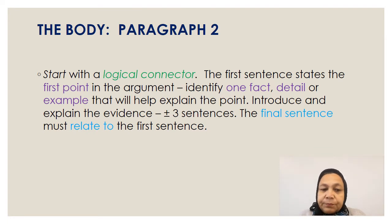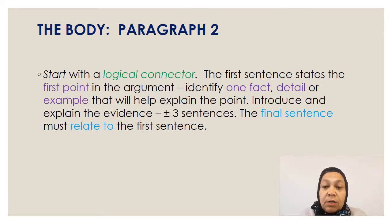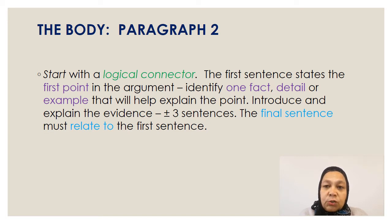Now we come to our body, our second paragraph. What do you need to include in that paragraph? Obviously, once you start with your logical connector, your first sentence will state the first point in your argument. So you've indicated in your first sentence that freedom of speech is a necessity because of a particular reason. Your next step is to identify one fact, one detail, and or an example that will help you to explain or substantiate that point. You will use approximately three sentences to pack that information in. Your final sentence of the paragraph must then relate back to the first sentence and explain or justify how that evidence reinforces the argument or statement that you started with.